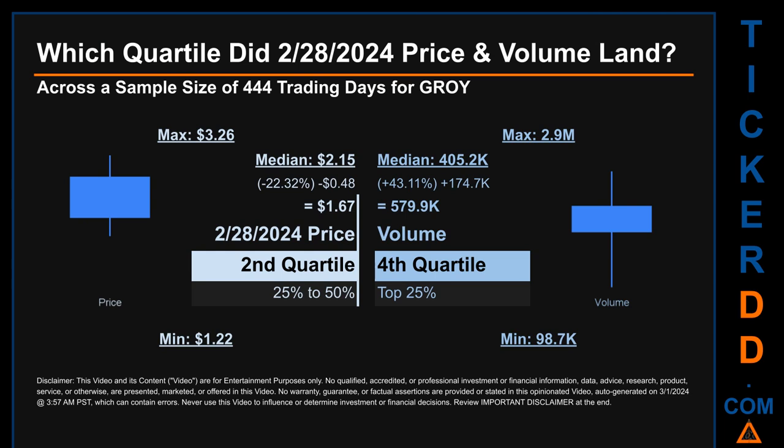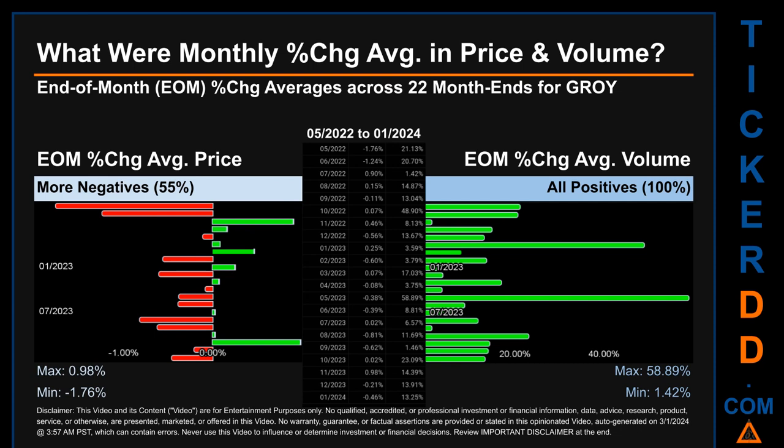Daily volume saw a max of 2.9 million and a minimum of 98,700. Quartiles tell us about the spread of a data set by breaking that data set into quarters, just like how the median breaks the set into half. Descriptively, GROY has a median price of two dollars and 15 cents; therefore, February 28, 2024's price was lower from that middle marker by 22.32 percent. The day's volume of 579,900 was more than the median by 43.11 percent.